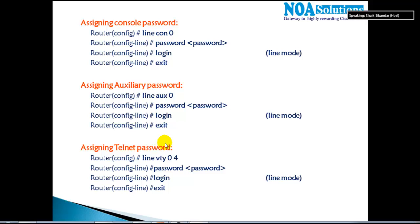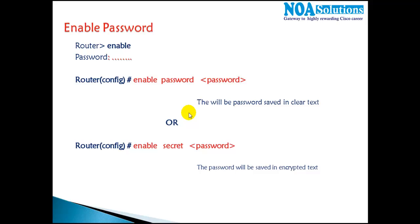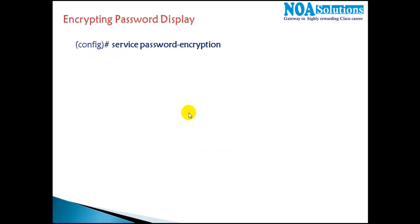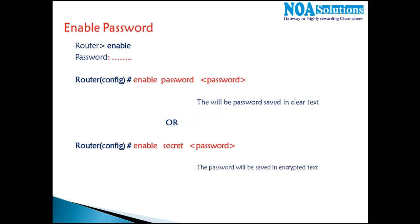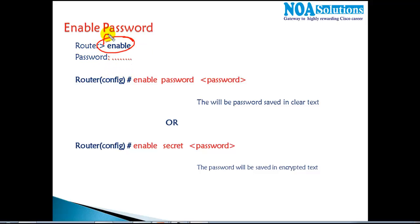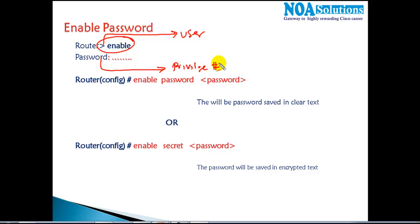Continuing with the same basic commands from the previous video, we have one more password we can assign called the enable password. When you type the enable command, by default you are in user mode, and to go to privilege mode — the hash mode — you need credentials.